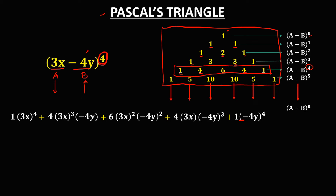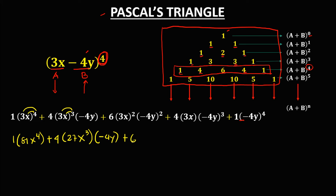The operation is all plus, so this is now the equation for every term. To simplify: 1 times 3 to the power 4 is 81, then x to the power 4, plus 4 times 3 to the power 3 — that's 27 — times x to the power 3 times negative 4y, plus 6 times 3 to the power 2 — that's 9 — times x to the power 2, times negative 4 to the power 2 — that's positive 16 — and y to the power 2.